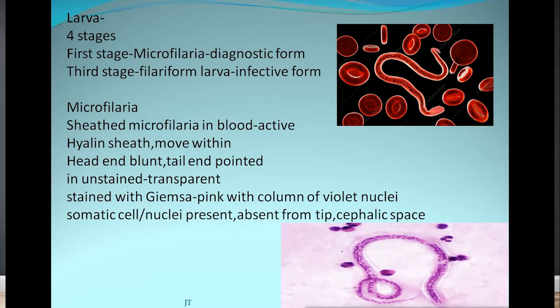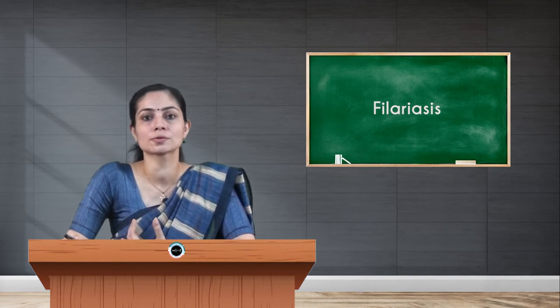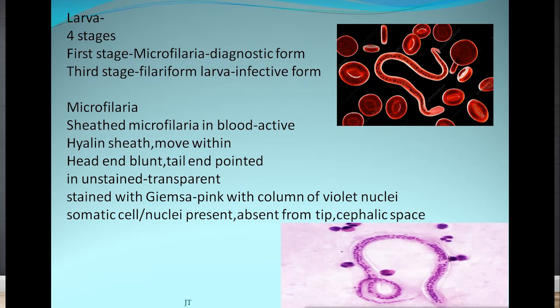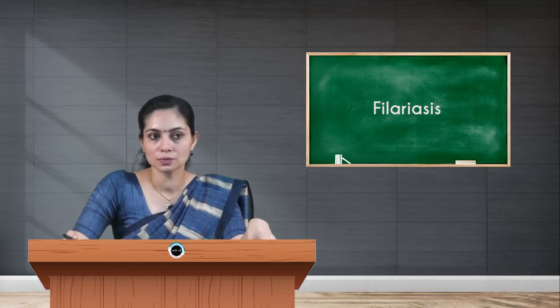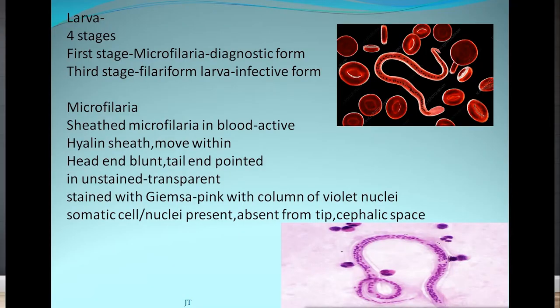Coming to the larval stage: as a nematode, there are four larval stages in the parasite. The first stage is very important as it is the diagnostic form, named microfilaria. These microfilaria are demonstrable in the patient's peripheral blood. Microfilaria of Wuchereria bancrofti will have a sheath stage — it is very active in blood within a hyaline sheath, and the parasite moves within this sheath. The head end is blunt and the tail end is pointed. In unstained preparations it may look colorless and transparent, but when stained with Giemsa it takes a pink color with a column of violet nuclei. These nuclei will be absent at the tip, at the cephalic space.